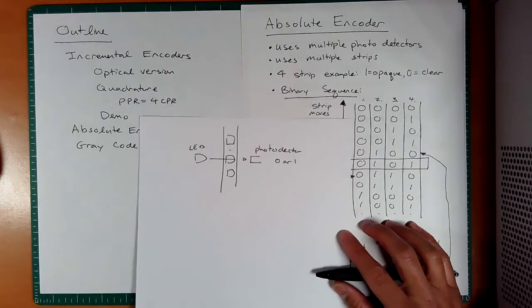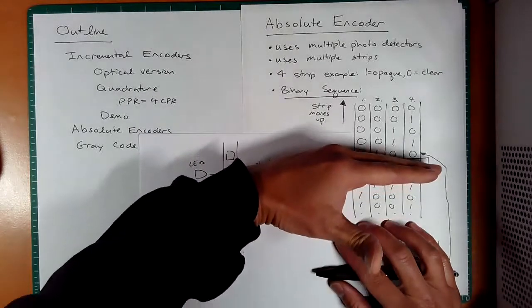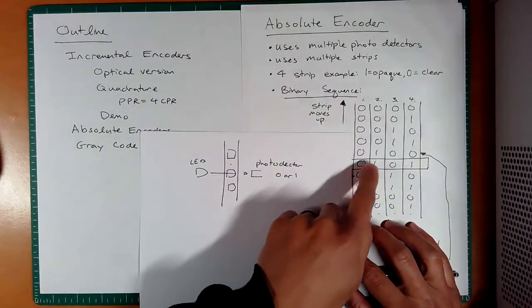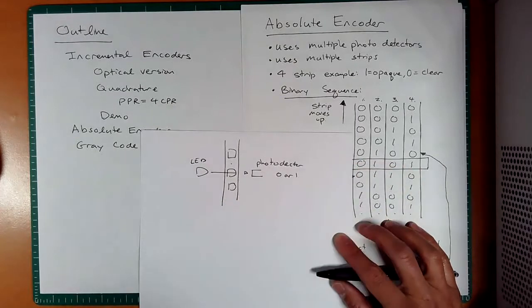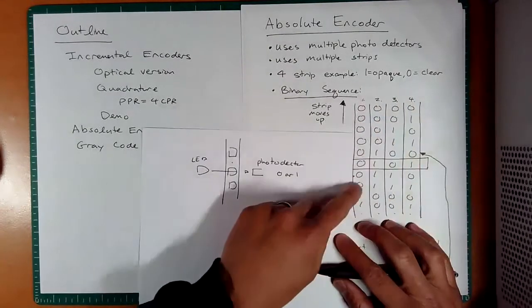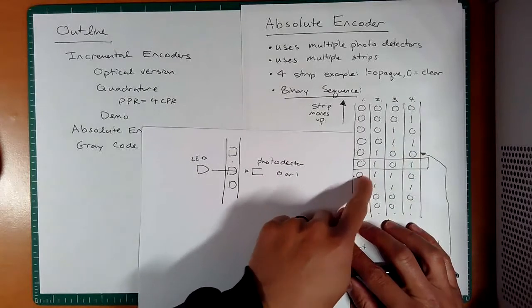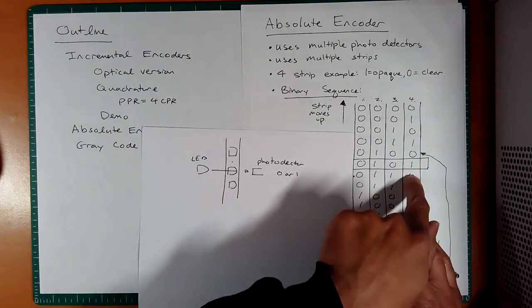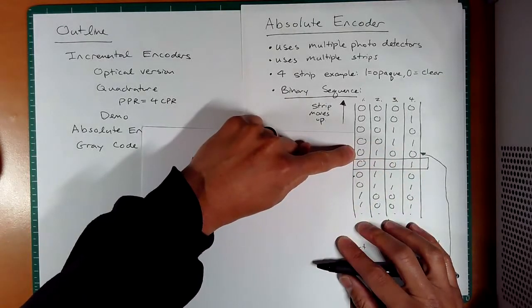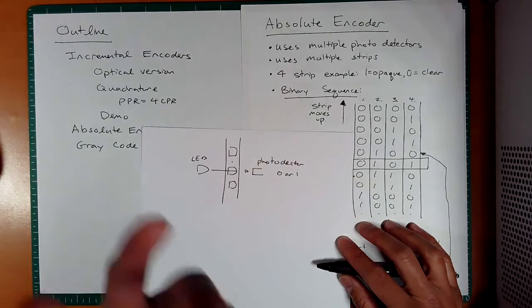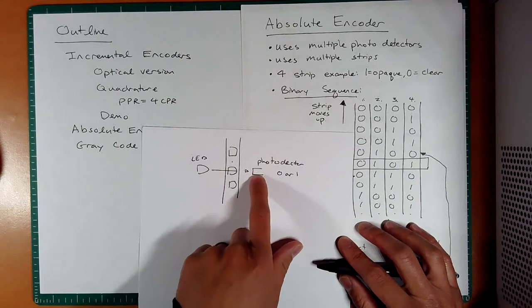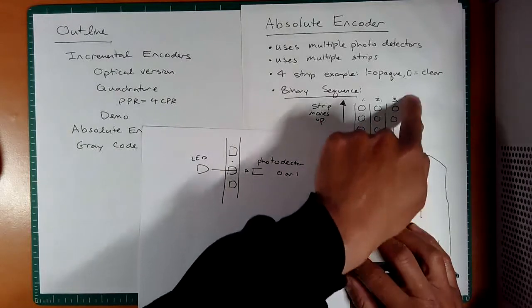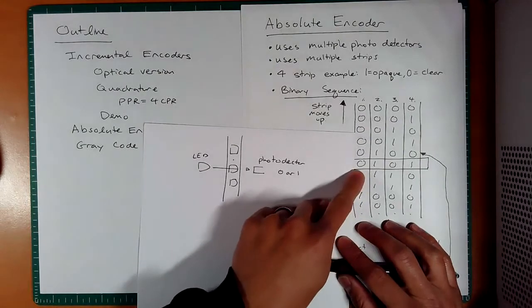But there's an issue actually with a binary sequence, and the issue with that is manufacturing tolerances. So let's look at a situation where the strip moves up. Let's say we're reading zero, one, zero, one, and we move this strip up, we would expect to see zero, one, one, zero, that's what we're hoping to see. Now notice the one above is zero, one, zero, zero. Now let's say the manufacturing tolerances were such that this photo detector was reading just a little early on the fourth column right here. What would happen?